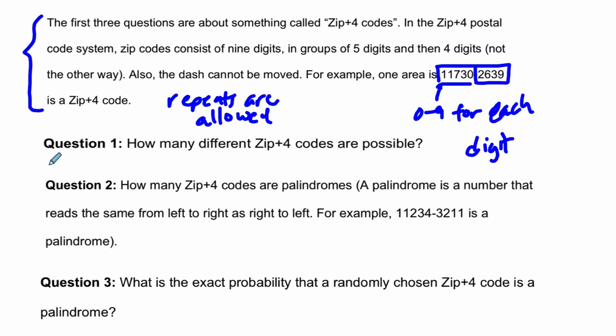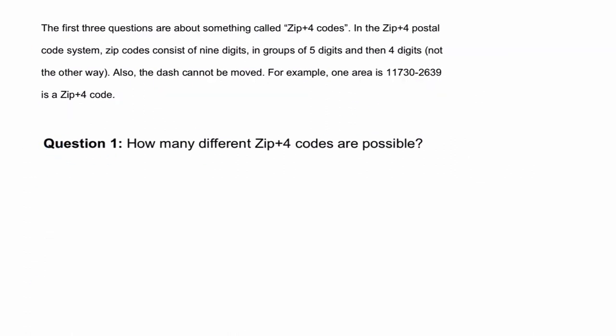So question one says, how many different zip plus four codes are possible? So this is a permutation type question. It's all the different orders that we can have here. And because we have repetition, we can always have ten digits per spot. So the first five spots would be ten to the fifth possibilities. So for each of the digits you pick for the first spot, there are ten choices, there are another ten that could follow, and ten after that. So that's ten to the fifth possibilities. And this dash, don't let the dash throw you off in the middle there.